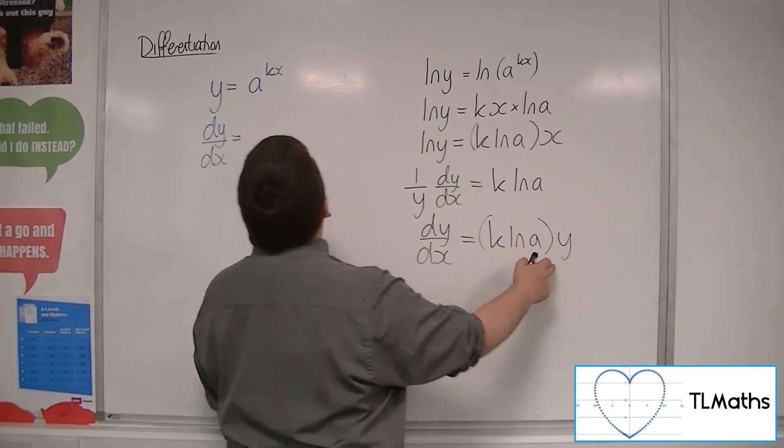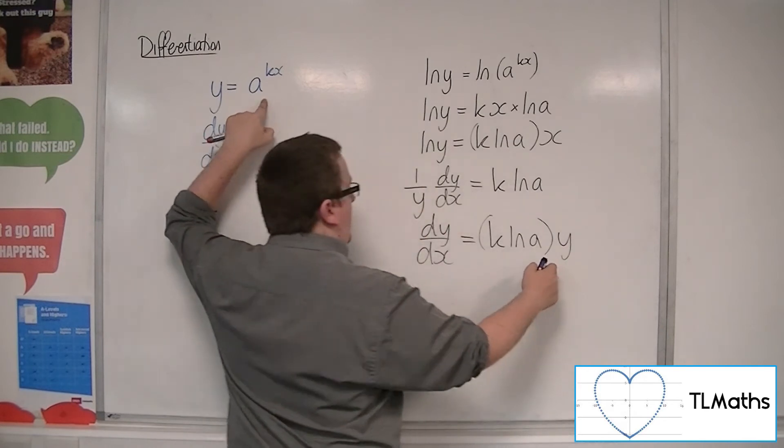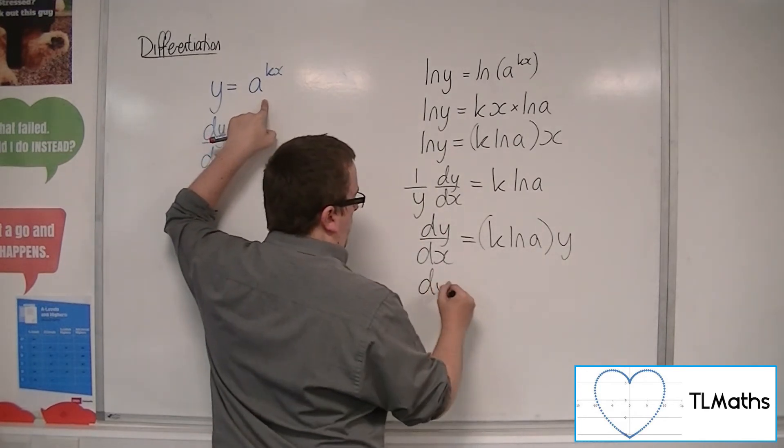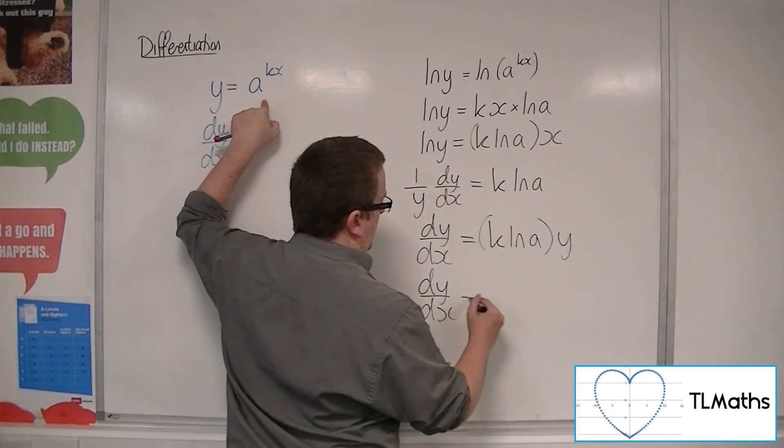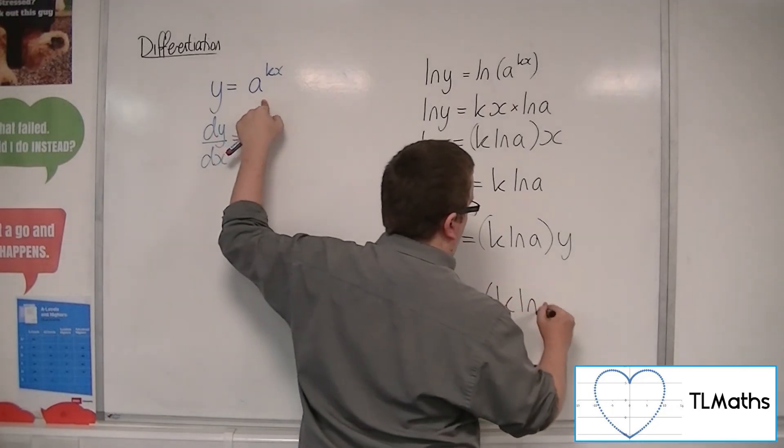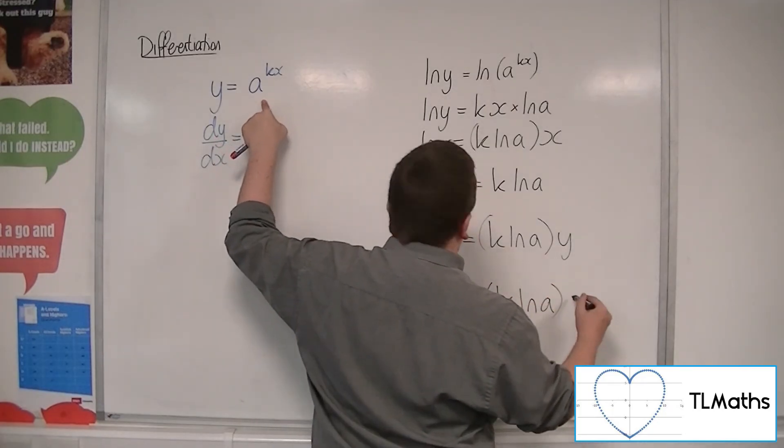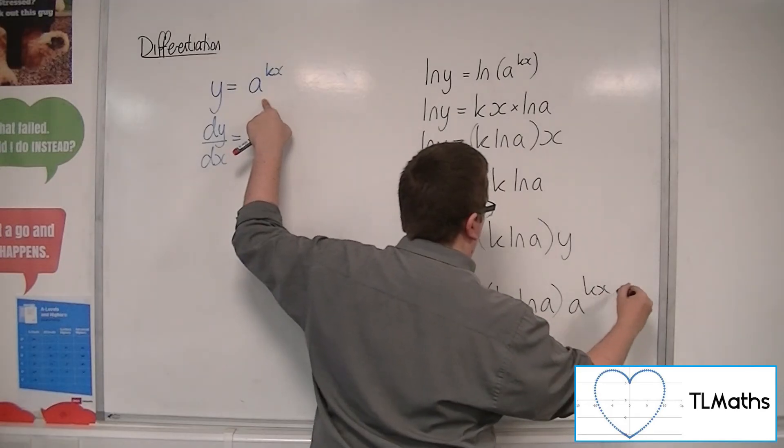Now y was just a to the kx. So dy by dx is k ln of a times a to the kx.